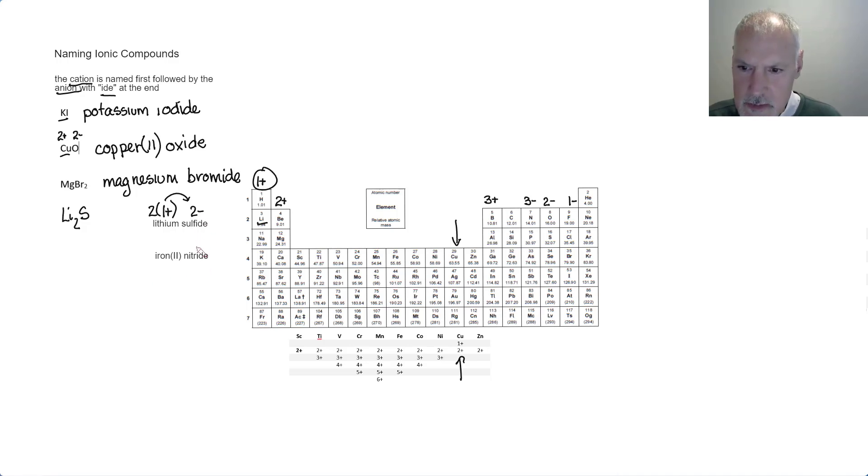Here, iron(II) nitride. Nitrogen is N with a 3- charge. Iron is multivalent, has many possible charges, but we're being specified here to use the 2, so it would be 2+. Iron wants to lose two electrons, and nitrogen wants to gain three. We need to balance that. We can do that by having three irons, which would lose six, and two nitrogens, which would gain those six. Our formula then would be Fe₃N₂.